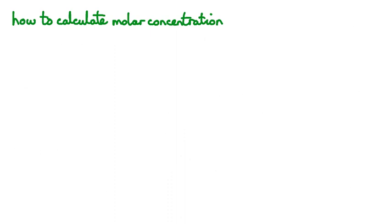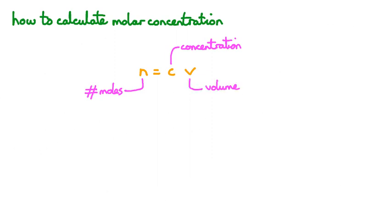The equation we need for calculating molar concentration is N equals CV, where N is the number of moles, C is the concentration, and V is the volume. It's also important to pay attention to the units: N is in moles, C is in moles per litre, and V is in litres.